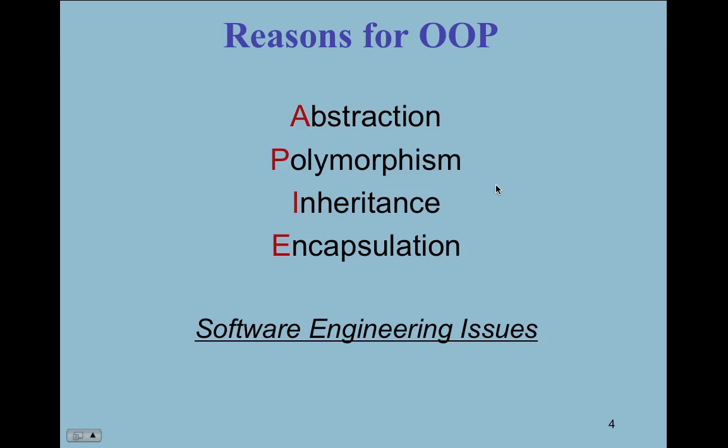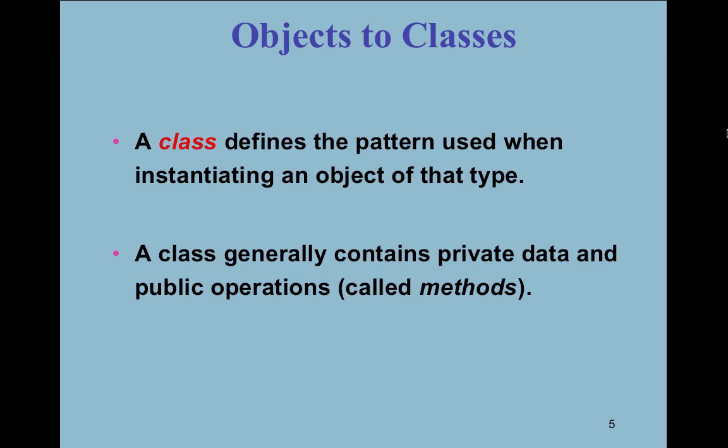These are all related to software engineering issues. The reason object orientation was invented was because there was a deficiency in old-style programming — programmers thinking like programmers, writing code sequentially — it had nothing to do with the real world or real application environment. The whole concept is fed on improving software engineering methodologies and making them more reliable and foolproof.